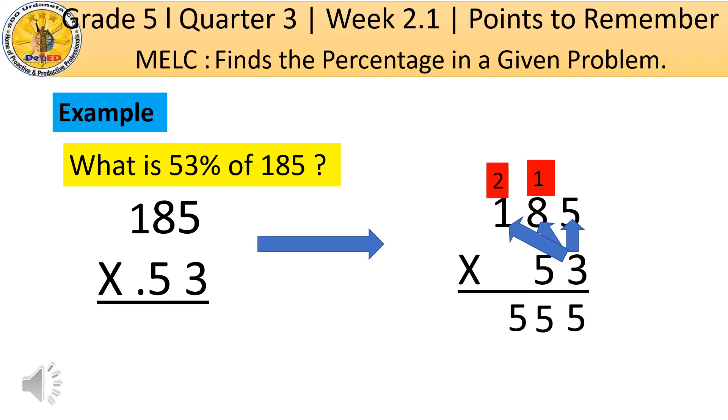The next thing to do, let us multiply the second digit of the multiplier which is 5. So 5 times 5 equals 25. Regroup 2 in the upper second digit of the multiplicand. Then 5 times 8 is 40 plus 2 equals 42. Then regroup 4 to the last upper digit of the multiplicand. 5 times 1 is 5 plus 4 equals 9.